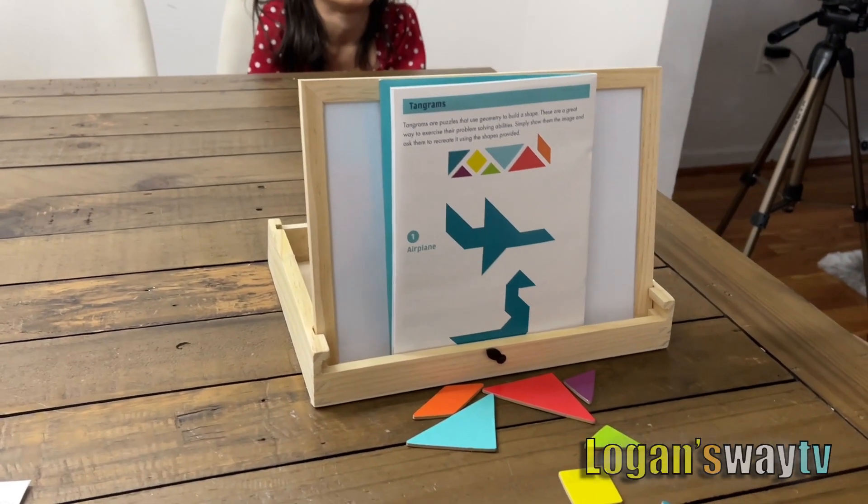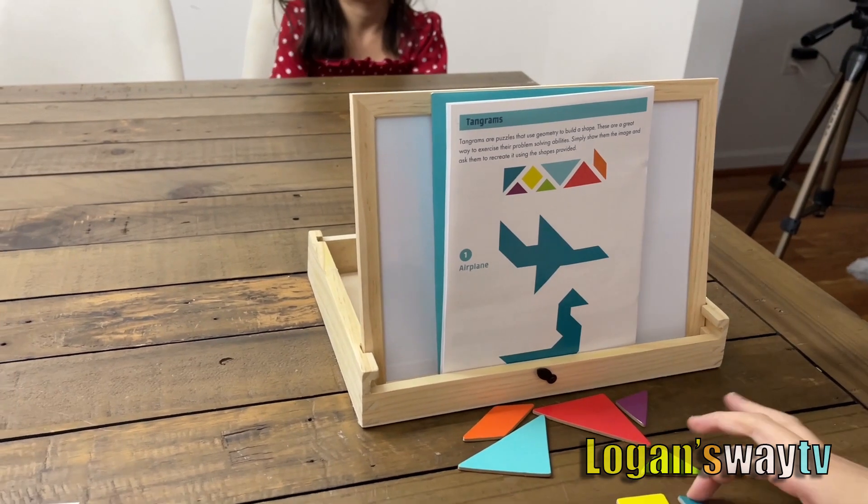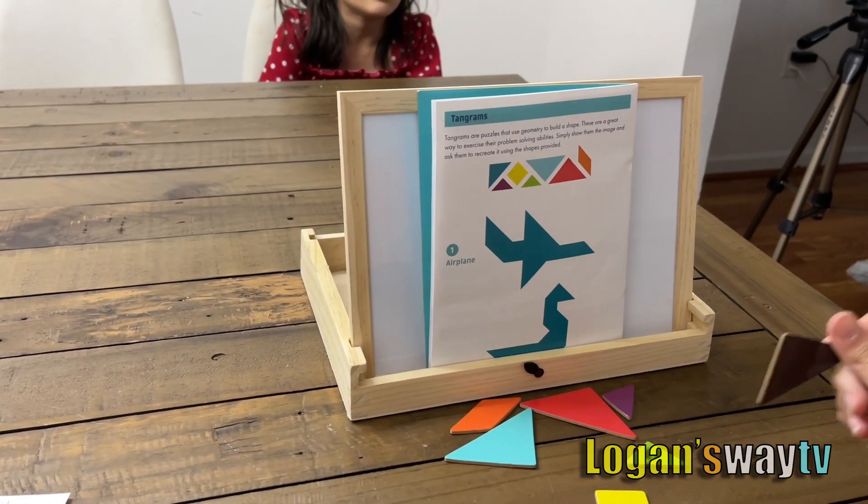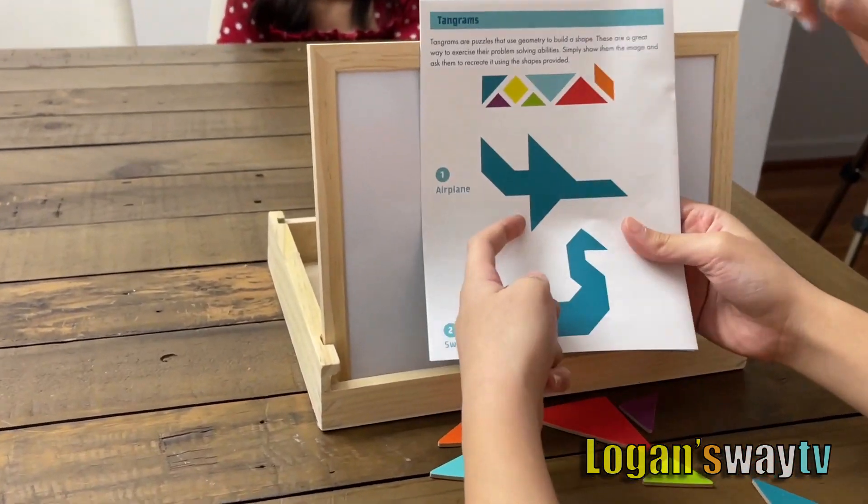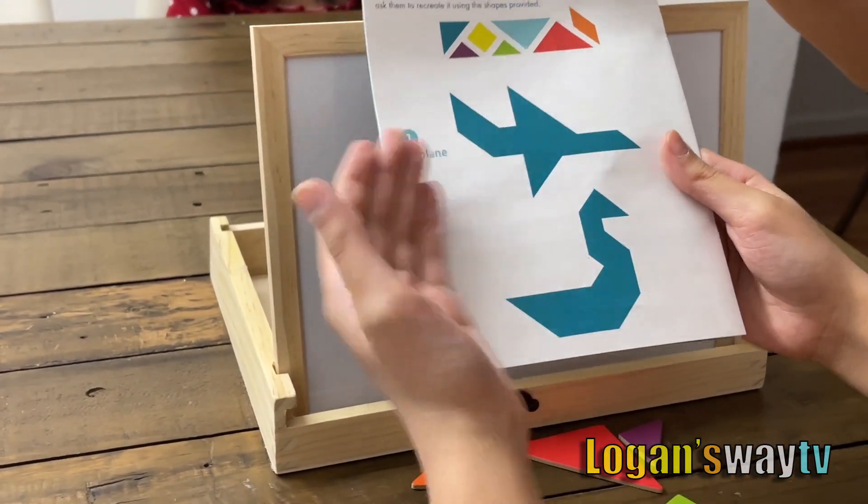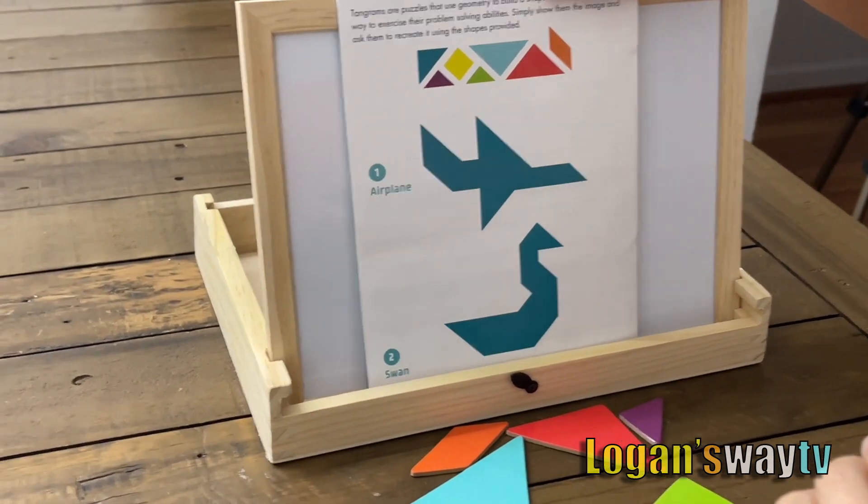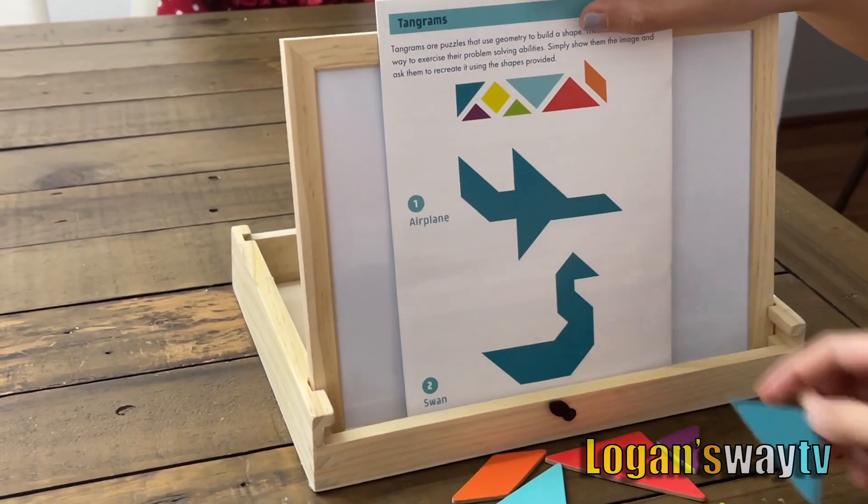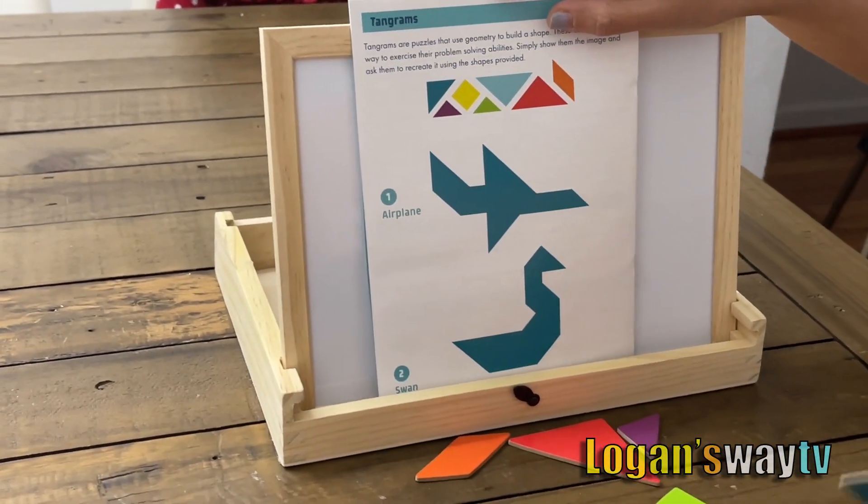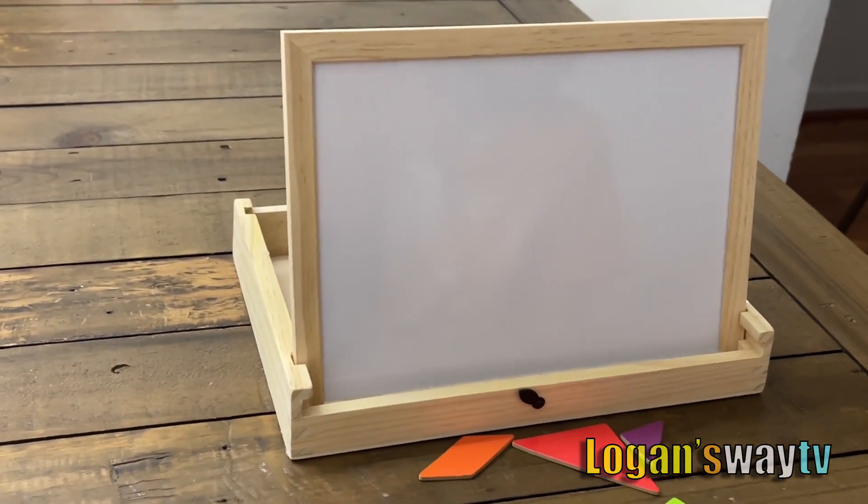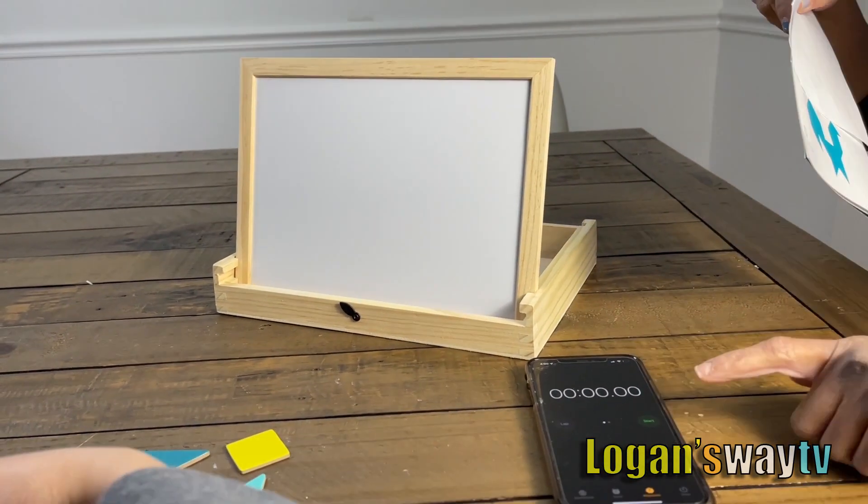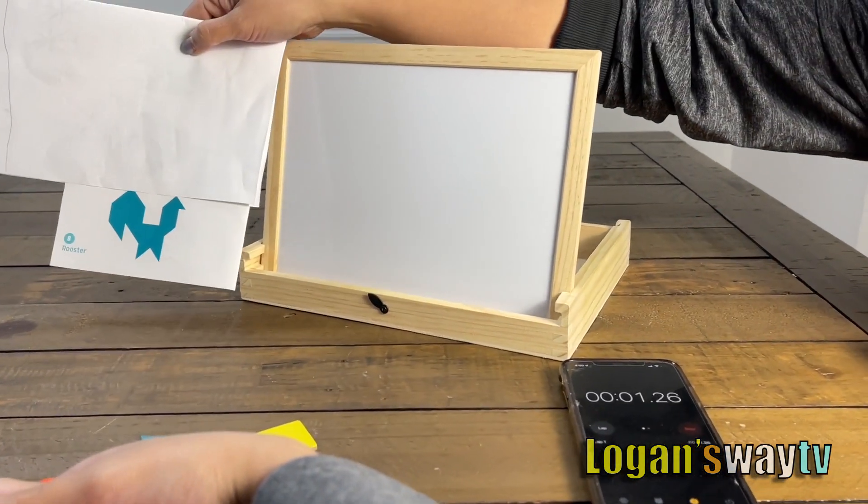Alright, so we're going to play tangrams. It's basically putting geometric shapes into a figure. It's time based - whoever does it fastest. You ready? Alright, so what do I pick? Okay, I'm gonna be picking it up. Okay, and start. Oh, Gianna's looking.